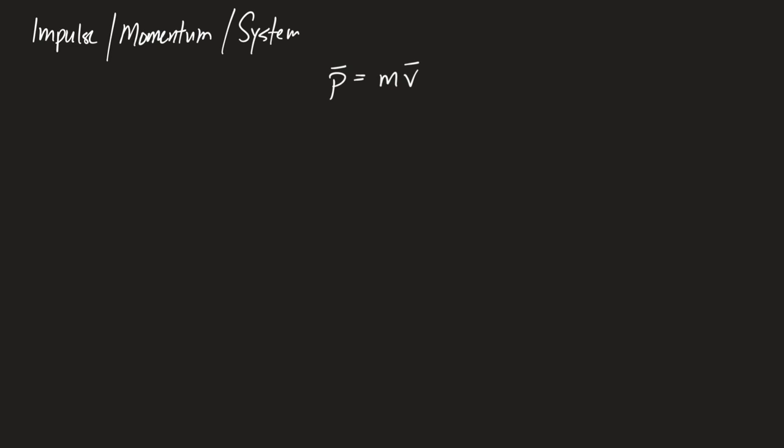Momentum is a vector quantity — unlike energy, it has direction. When measuring momentum, unlike energy which has an extra emphasis on velocity (squared), momentum gives equal footing to both mass and velocity, but it takes into account what direction the object is going. That means we're back to figuring out what positive means — you need to establish what direction you're calling positive, because the direction of the momentum is the direction of the velocity. No special units: it's kilograms·meters per second, and no special name is given to that unit.